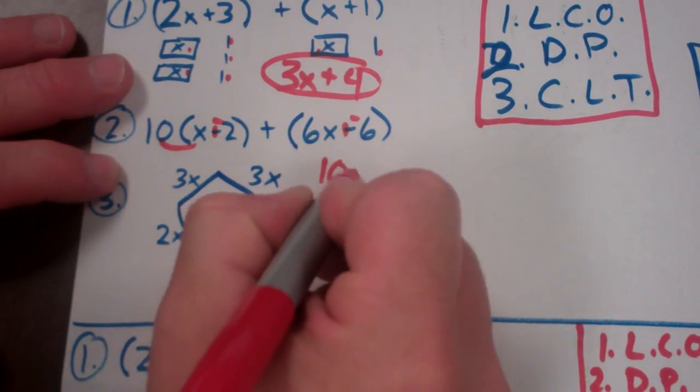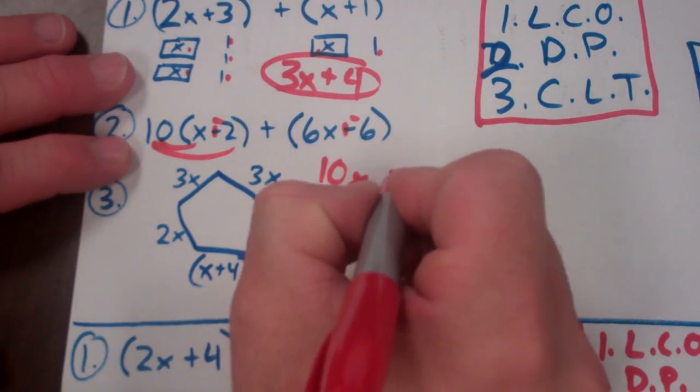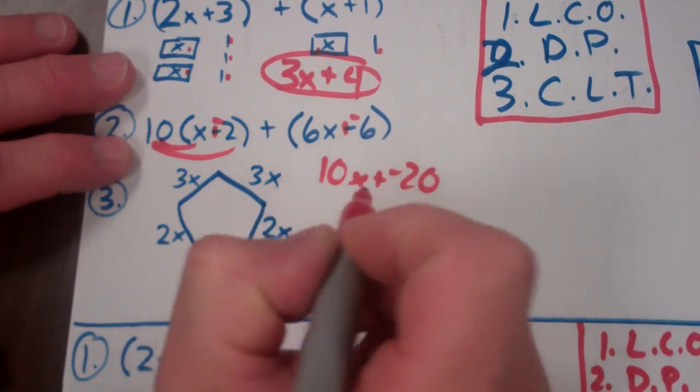Distributive property. 10 times x is 10x. 10 times negative 2 is negative 20. Put your plus sign back in between.